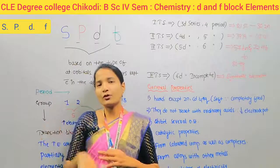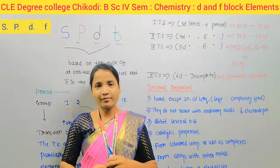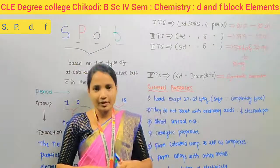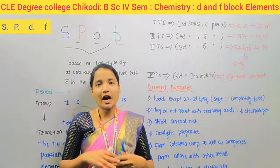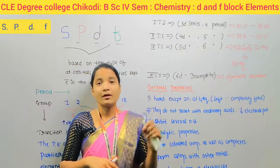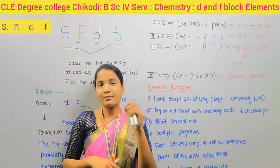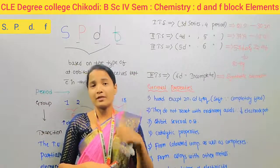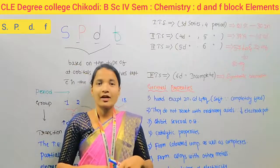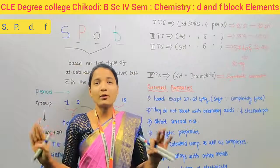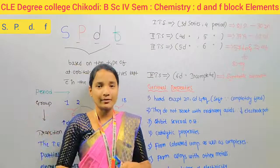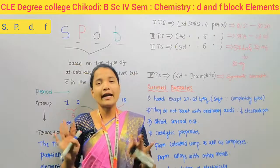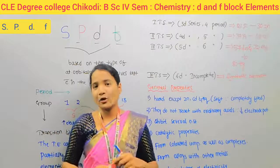Before going to today's topic, I want to check your previous knowledge about the periodic table. Tell me fast: how many periods are present in the periodic table, how many groups are present, and how many total elements are present? Obviously, there are 118 elements present in the periodic table.